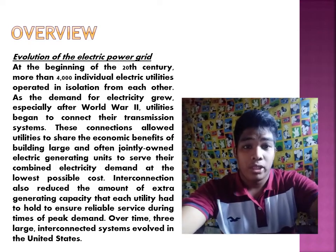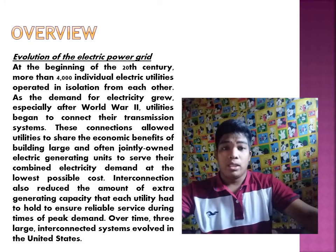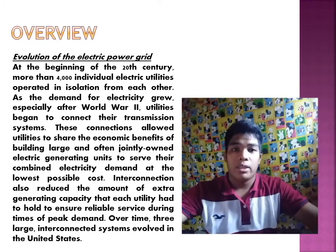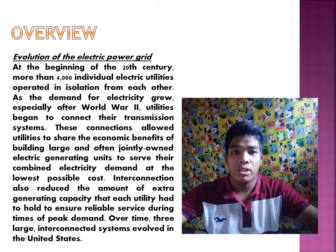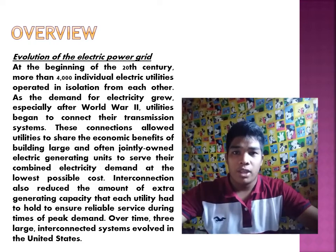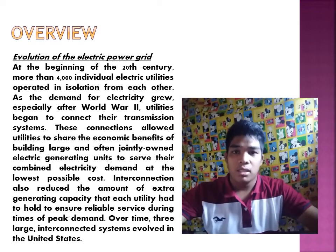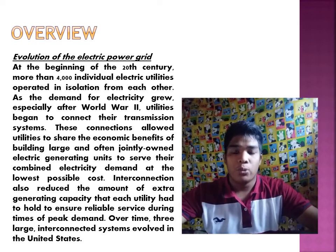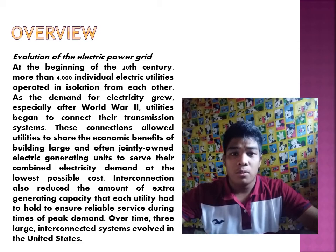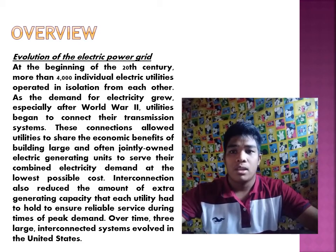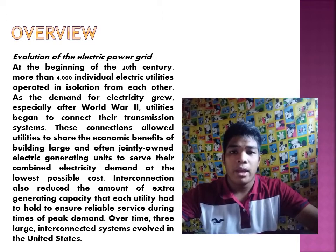In the evolution of the electric power grid, at the beginning of the 20th century more than 4,000 individual electric utilities operated in isolation from each other. As the demand for electricity grew, especially after World War II, utilities began to connect their transmission systems. These connections allowed utilities to share the economic benefits of building large, and often jointly owned, electric generating units.